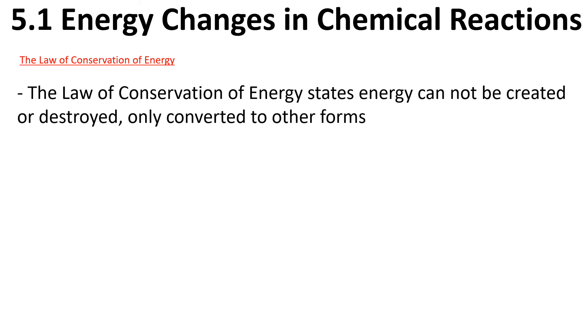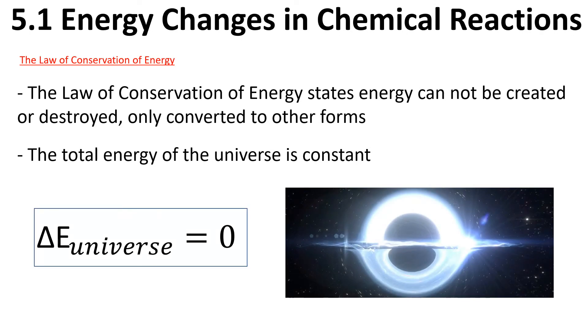We need to discuss the law of conservation of energy, which states energy cannot be created or destroyed, only converted to other forms. The total energy of the universe is constant. There's no more energy being created within the universe. It was all created 13.7 billion years ago in the Big Bang. We can say that the change in energy of our universe is equal to zero. The net change is always the same.